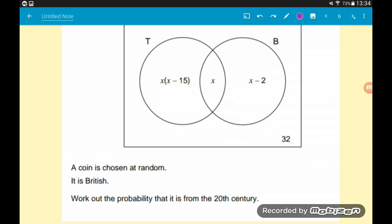32 coins are neither from the 20th century or British. The question says a coin is chosen at random, it is British. We want to work out the probability that it is also from the 20th century.